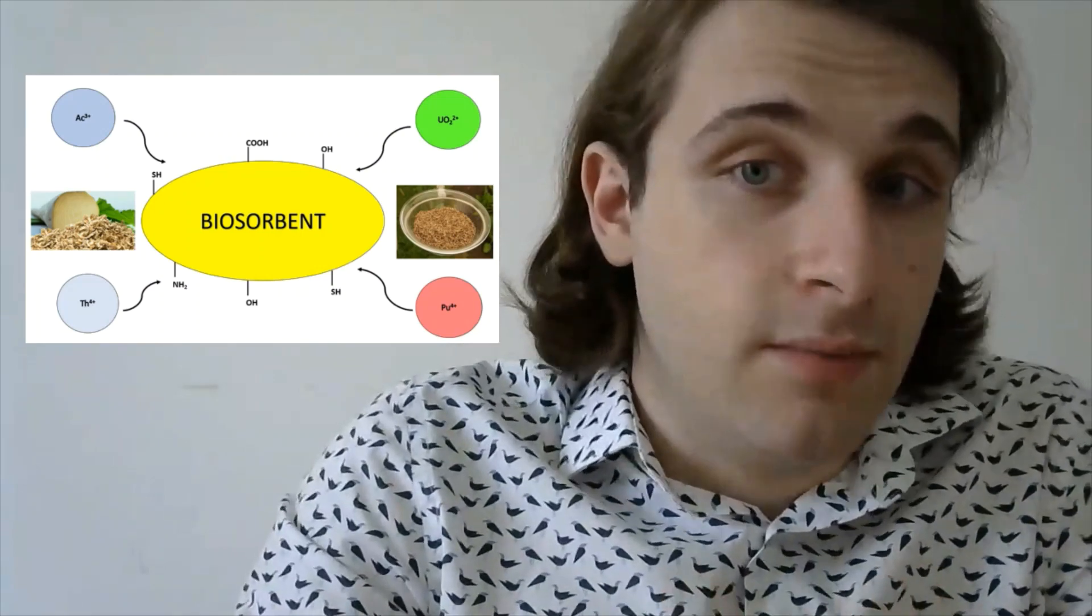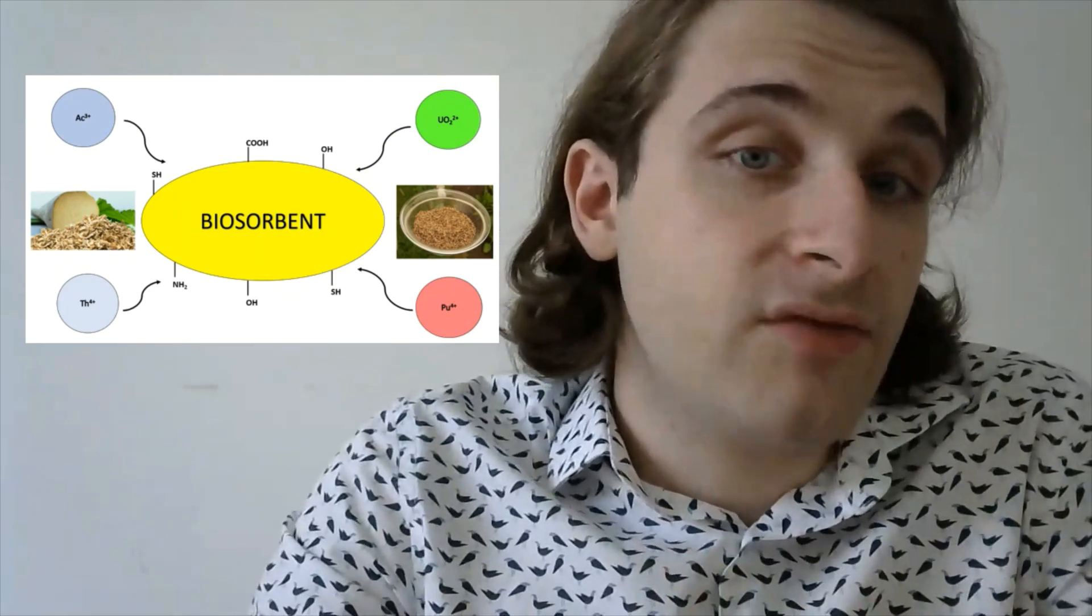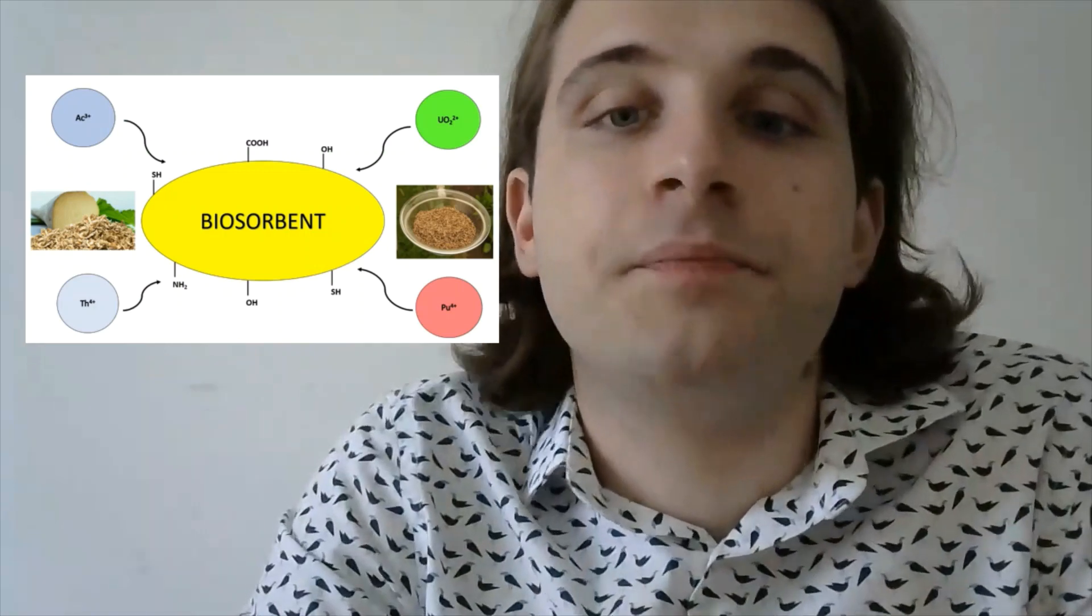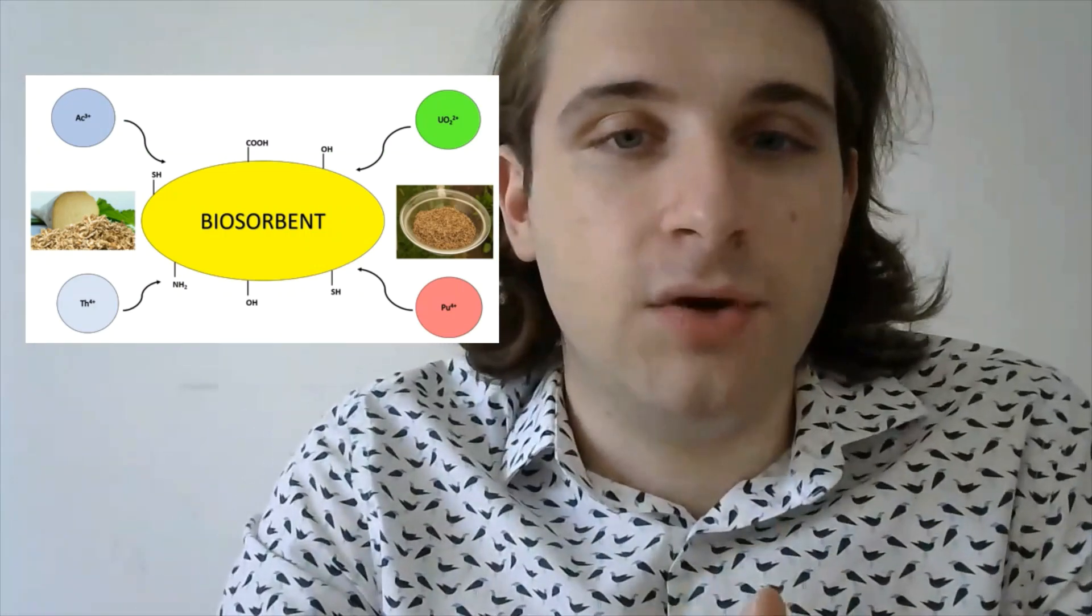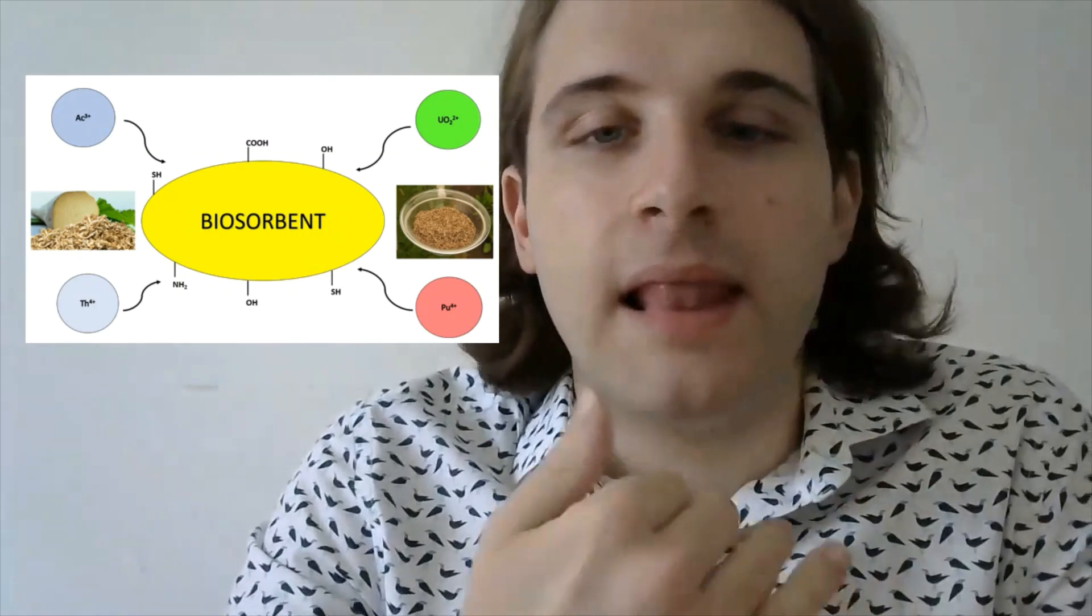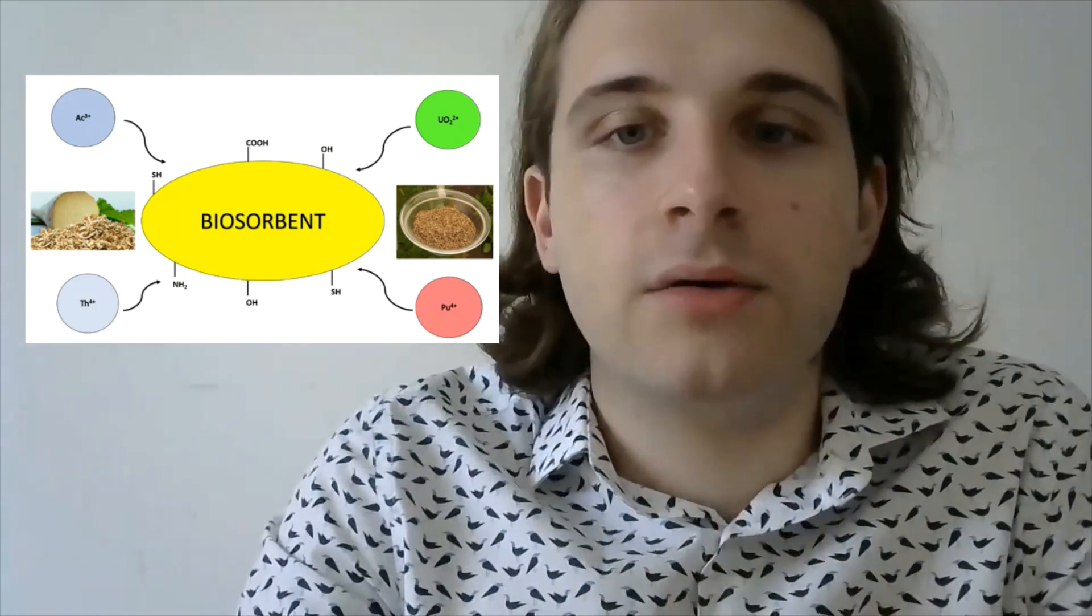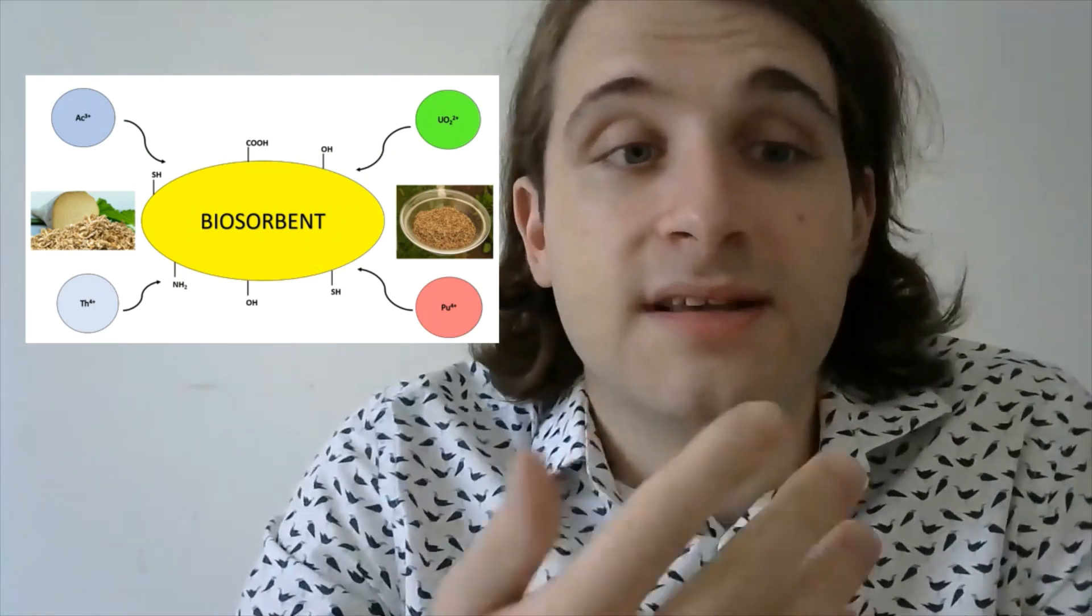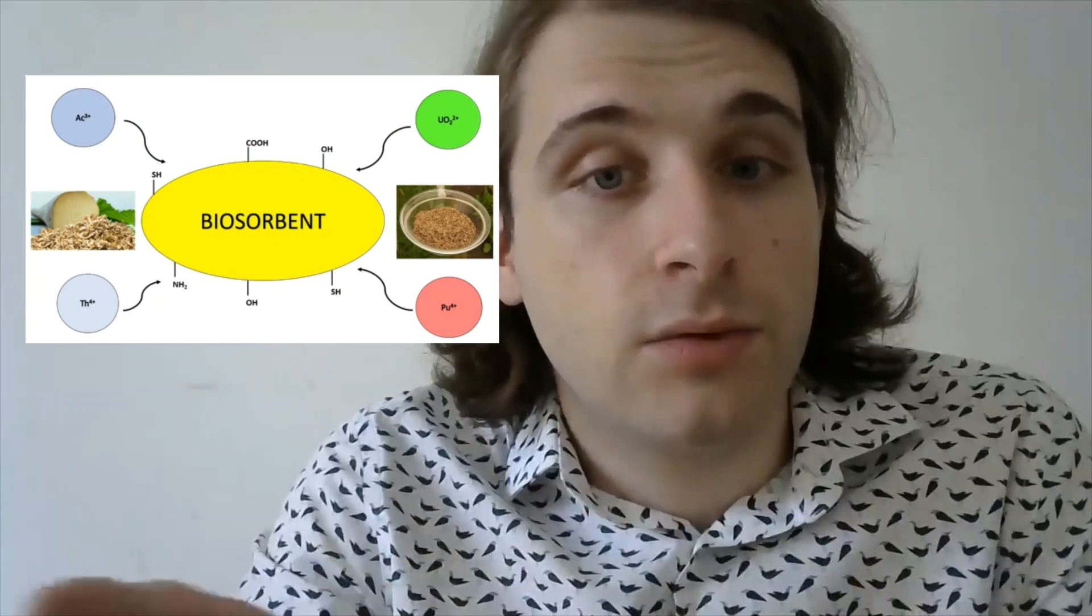Sugar beet was used in my work, which was considered waste after the industrial sugar extraction process. In addition to sugar beet, many materials can be used such as the peel of bananas, lemons, oranges, pomelos, even pomegranate, various algae, various plant seeds, and so on.